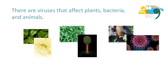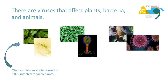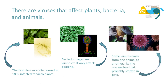There are viruses that affect plants, bacteria and animals. The first virus ever discovered, in 1892, infected tobacco plants. Bacteriophages are viruses that only attack bacteria. And some viruses cross from one animal to another, like the coronavirus that probably started in bats.